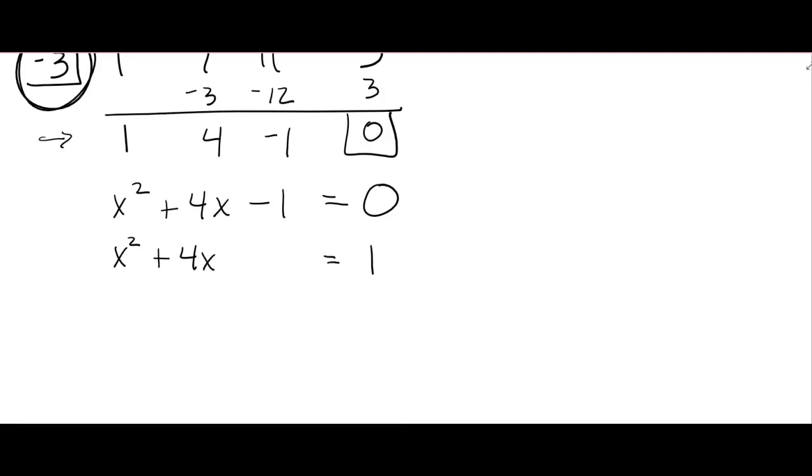But you probably want me to use quadratic formula. If I put the 1 on the other side, and then if I take half of 4 and square it, so what's 4 divided by 2 squared? It's going to be 2 squared, which is 4. Add 4 to both sides.